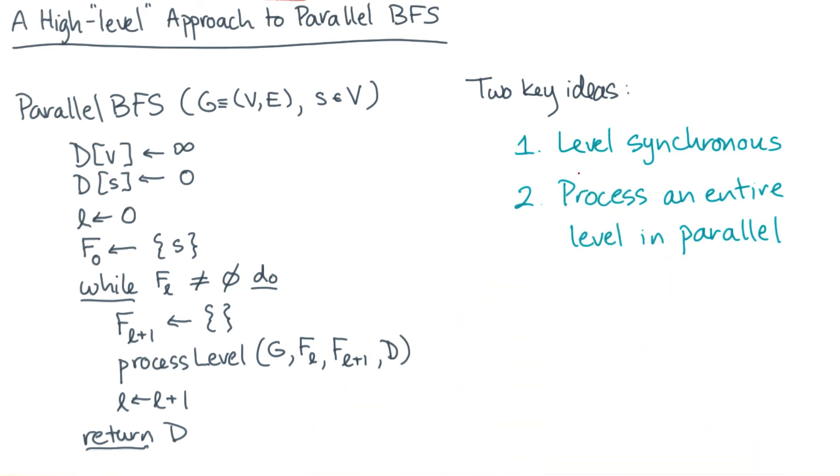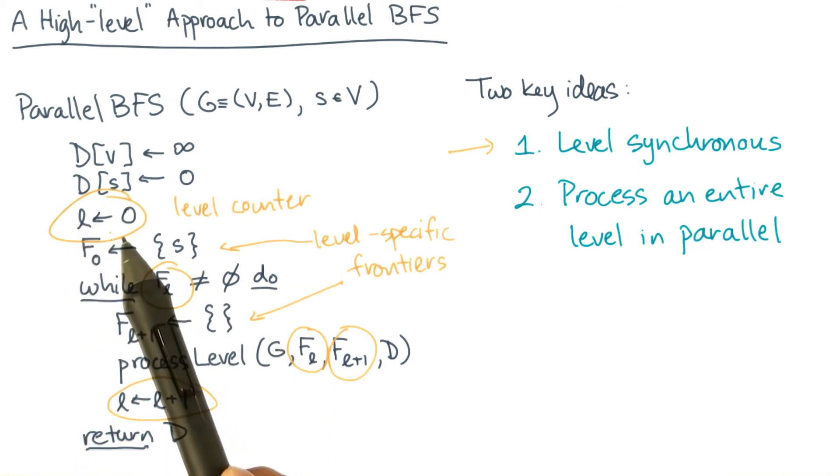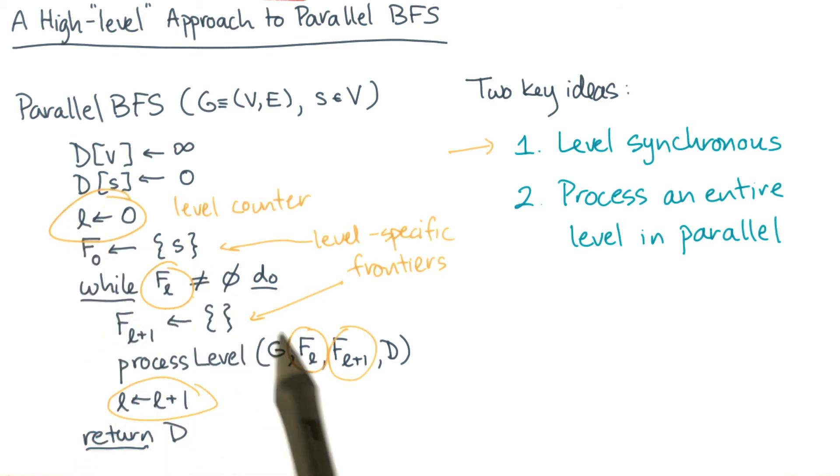Now it looks almost exactly like the sequential algorithm, but there are two really important differences. First, the algorithm is level synchronous. Notice that there's a level counter, and there are these level specific frontiers, F sub L and F sub L plus one. Now since this loop is going level by level, the span, as defined by the while loop anyway, ought to be no more than the diameter of the graph.